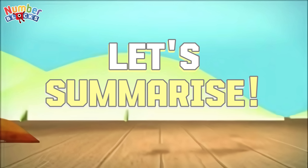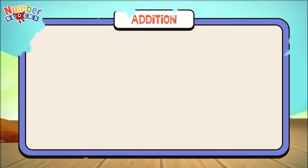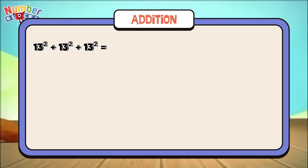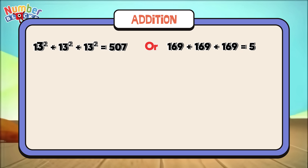Let's summarize. Let's learn addition. 13 square plus 13 square plus 13 square is equals to 507, or 169 plus 169 plus 169 is equals to 507. 15 square plus 15 square plus 15 square is equals to 675.